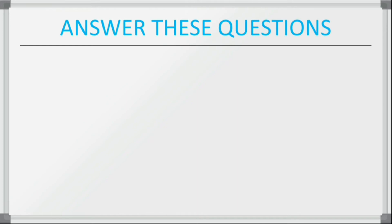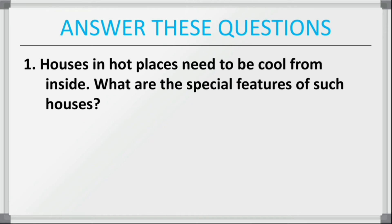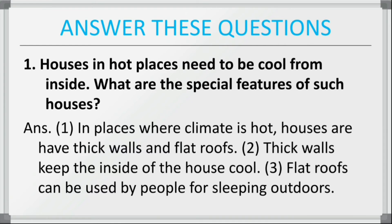Now we have long answer questions. First question: houses in hot places need to be cool from inside — what are the special features of such houses? In places where the climate is hot, houses have thick walls and flat roofs. Thick walls keep the inside of the house cool, and flat roofs can be used by people for sleeping outdoors when it is too hot inside.